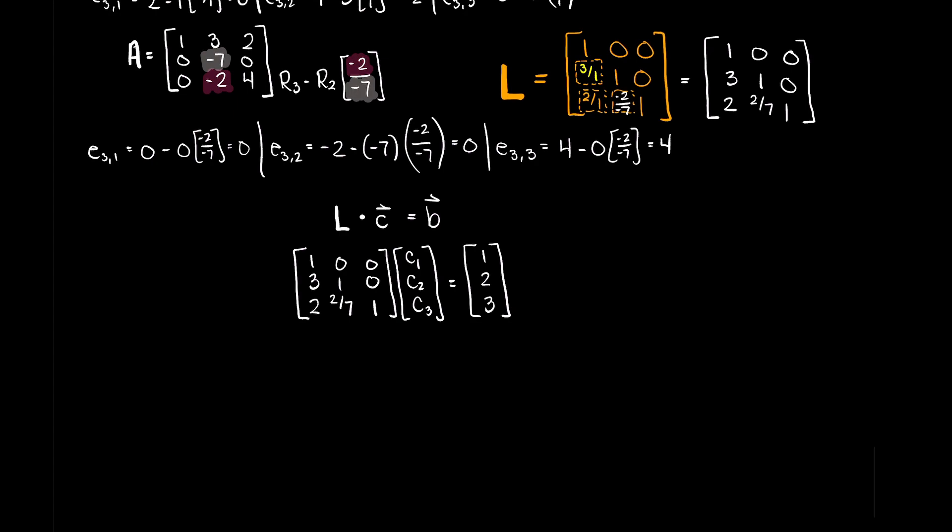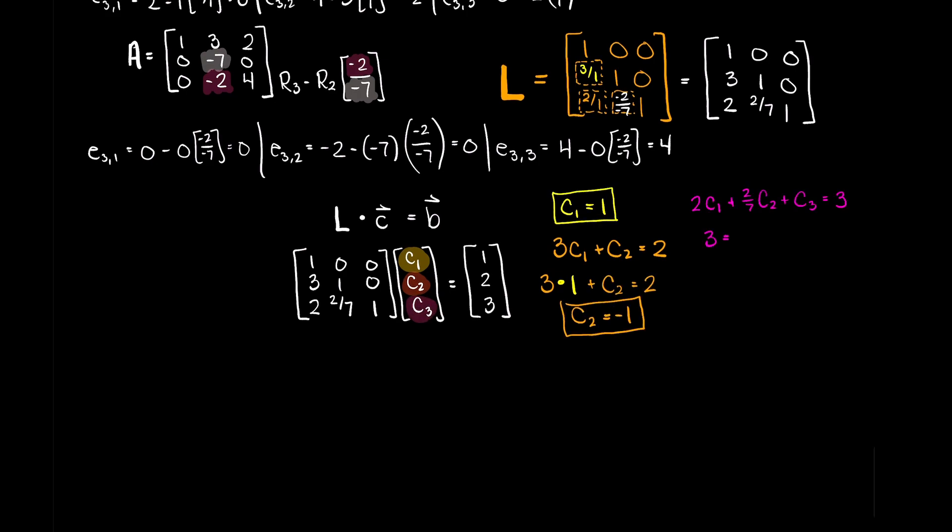So, as you can see here, once we write out all of our matrices, the only thing we need to do is complete a quick forward substitution to find all of our missing constant values. After solving, you can see that C1 is equal to 1, C2 is equal to minus 1, and lastly C3 is equal to roughly 1.2857 after truncating our fraction for simplicity.